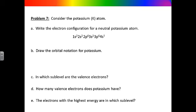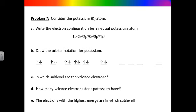The next part asks us to draw the orbital notation. The orbital notation must correspond to the electron configuration. The 1s sublevel has one orbital; the 2s sublevel has one orbital; the 2p sublevel has three orbitals; the 3s sublevel has one orbital; the 3p sublevel has three orbitals; the 4s sublevel has one orbital. There are two electrons in 1s, two in 2s, six in 2p — filling each orbital with one electron before doubling up. There are two electrons in 3s, six in 3p, and only one electron in 4s.